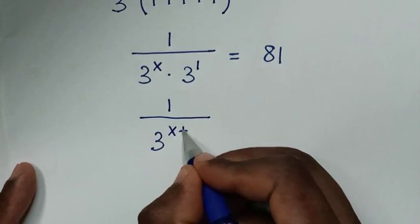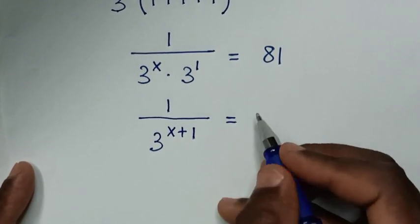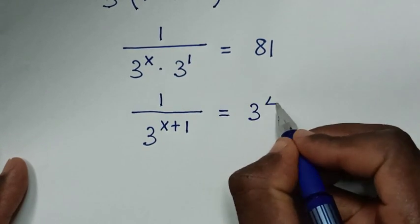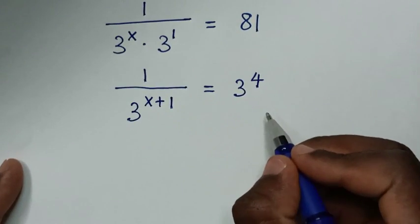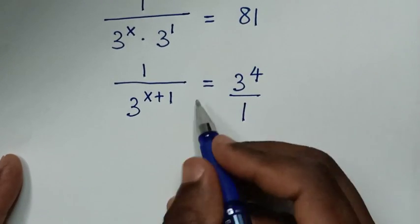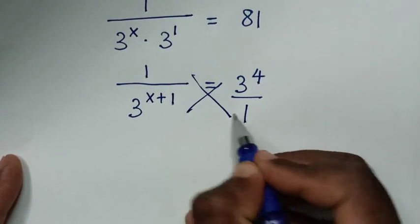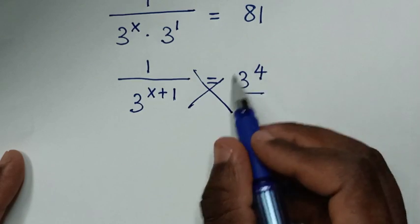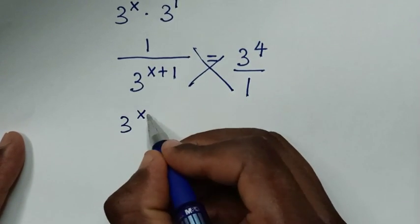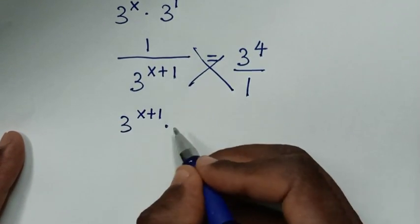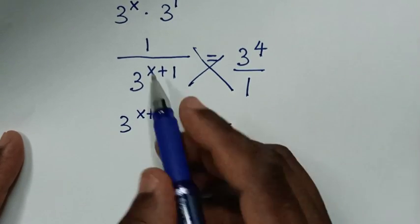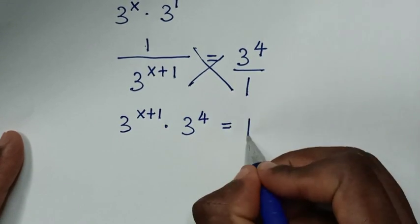So 1 over 3^(x+1) is equal to 81, which is the same as 3^4. Then, since 3^4 is the same as 3^4 over 1, we cross multiply: 3^(x+1) times 3^4 is equal to 1 times 1, which is 1.